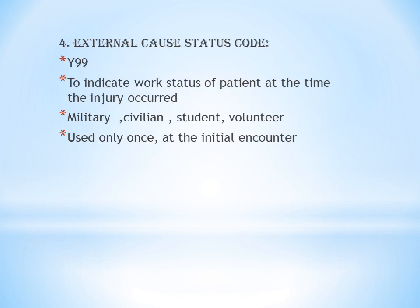Status code — code Y99 — indicates the work status of the patient at the time of injury. Common examples are: military, civilian (other than military), student, and volunteer. If such a status is mentioned, you can assign the status code. Note that cause, place, activity, and status external cause codes should only be coded if they are mentioned. They are also used only once at the initial encounter.